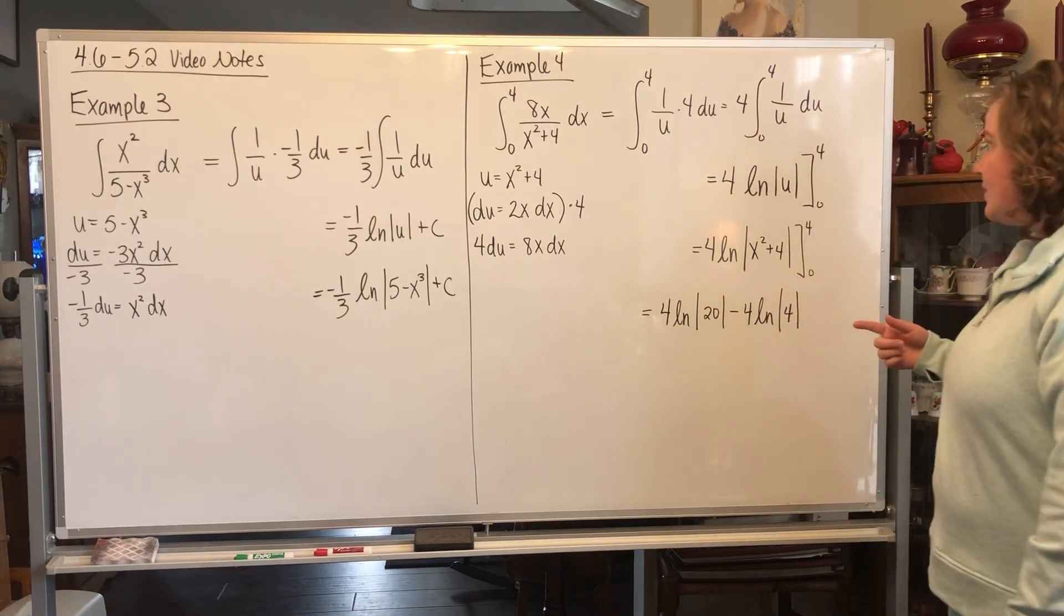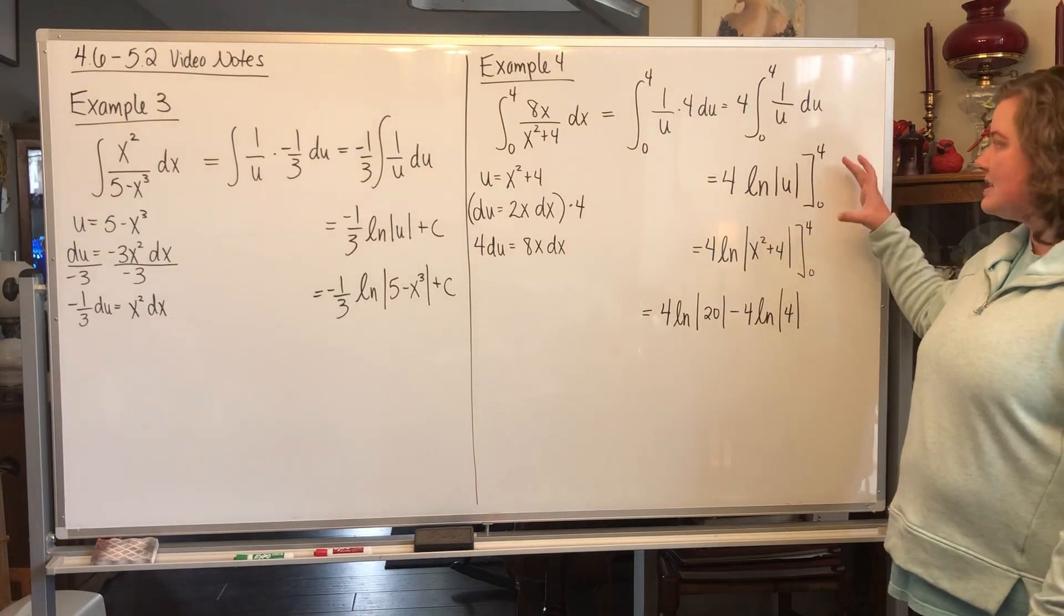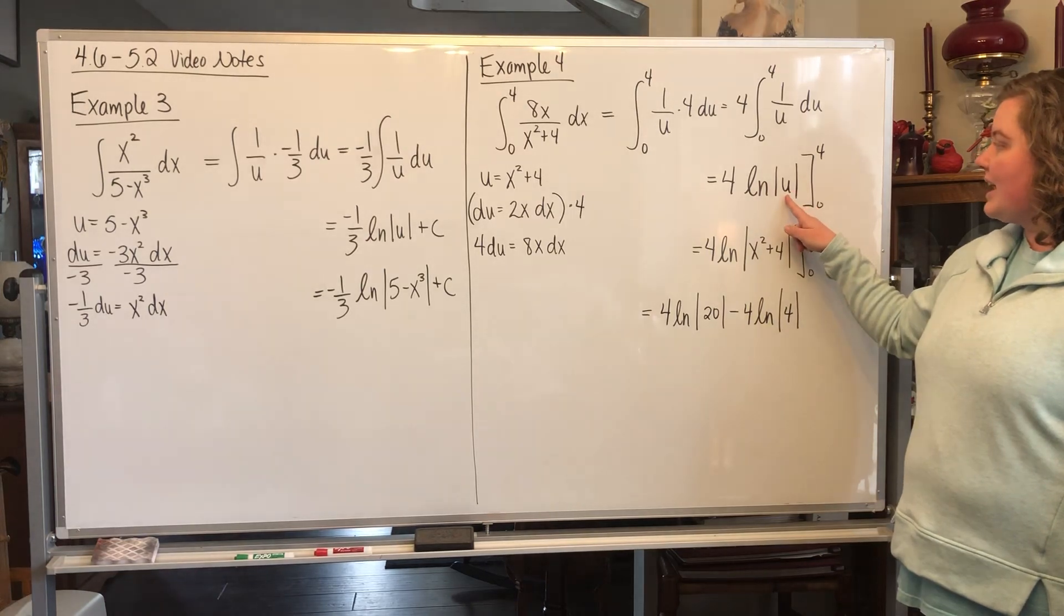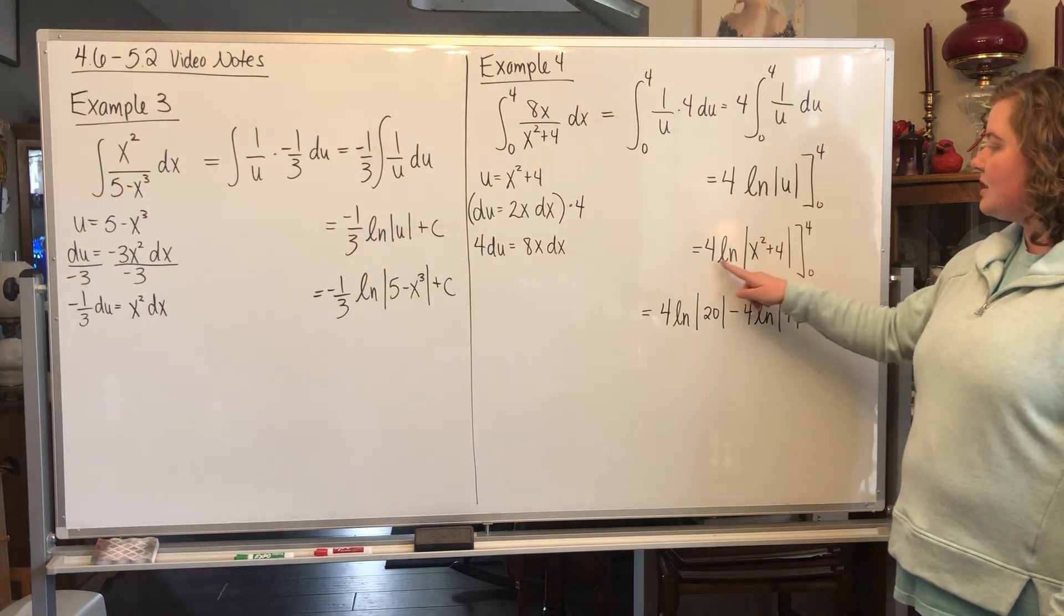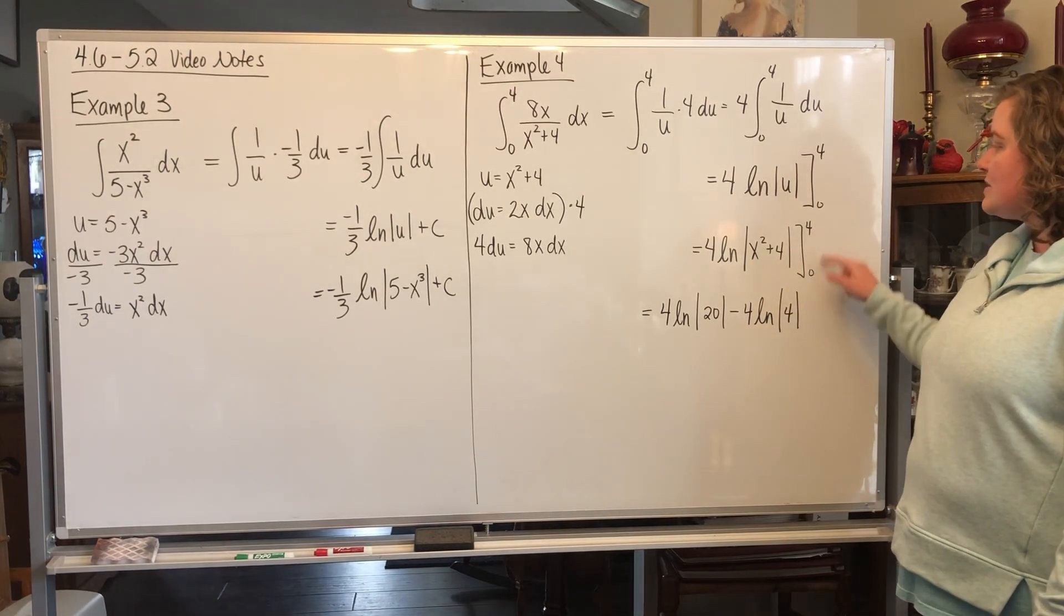The antiderivative of 1 over u is the natural log of u. There's no plus c this time because we're doing a definite integral. Bring down that 4. Now I'm going to switch everything back in terms of x. Our u was x squared plus 4, so I'm going to put 4 times natural log of x squared plus 4, evaluate it from 0 to 4.